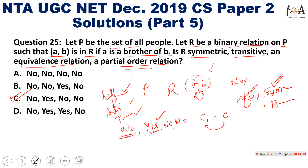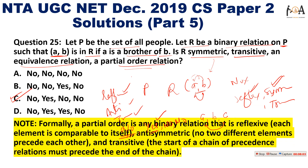Formally, a partial order is a binary relation that is reflexive, anti-symmetric, and transitive. For an equivalence relation, we need reflexivity, symmetry, and transitivity. Here, symmetry is not satisfied, so it is not an equivalence relation. Reflexivity and anti-symmetry are also absent, confirming it is not a partial order either. Option C is the correct answer.